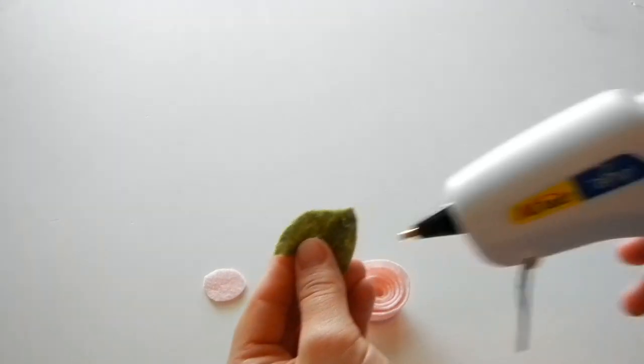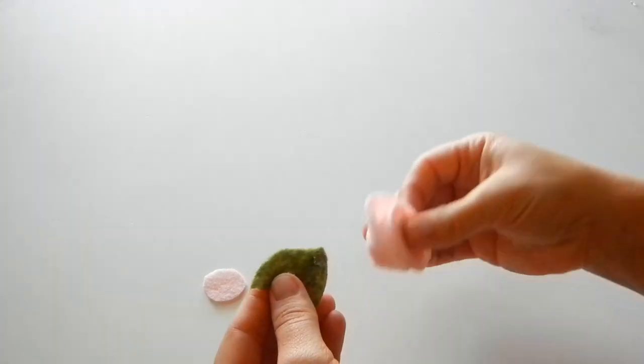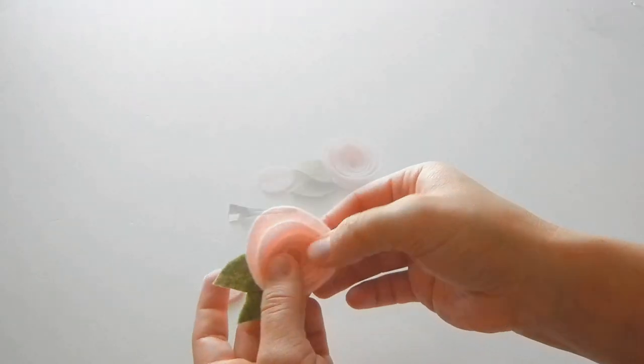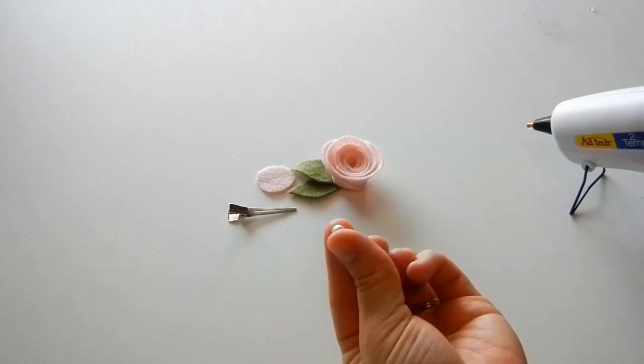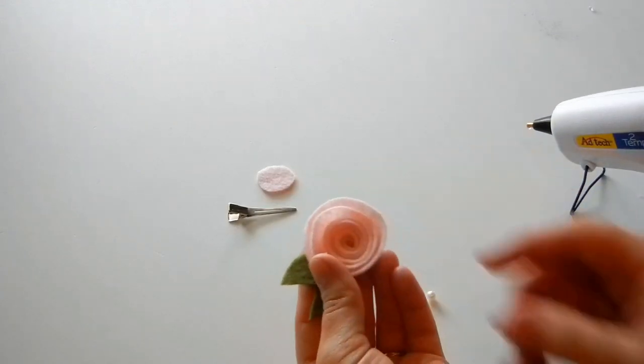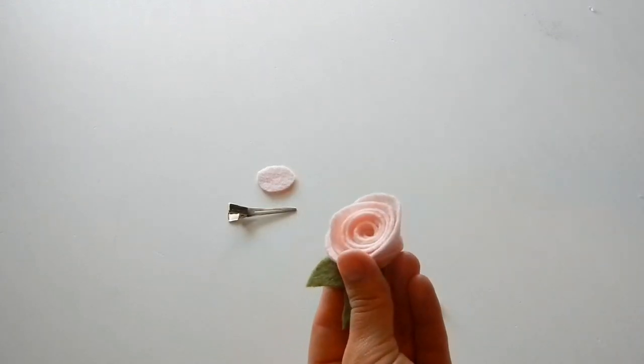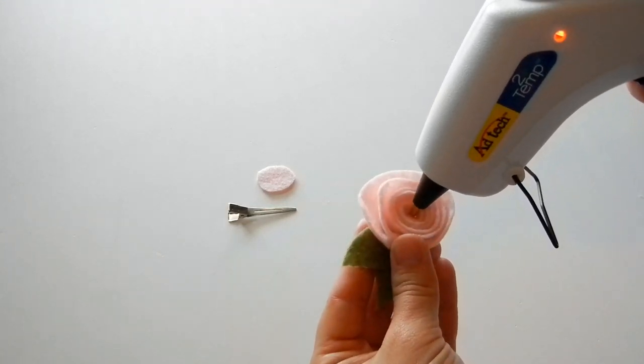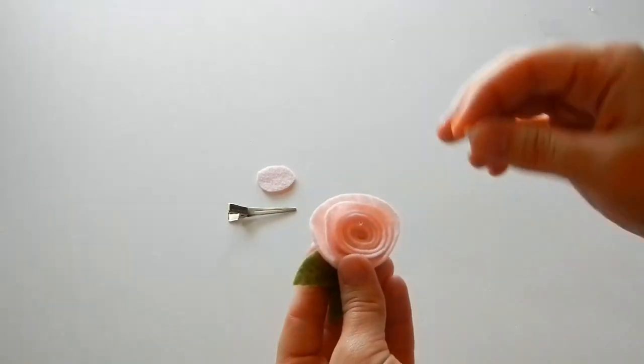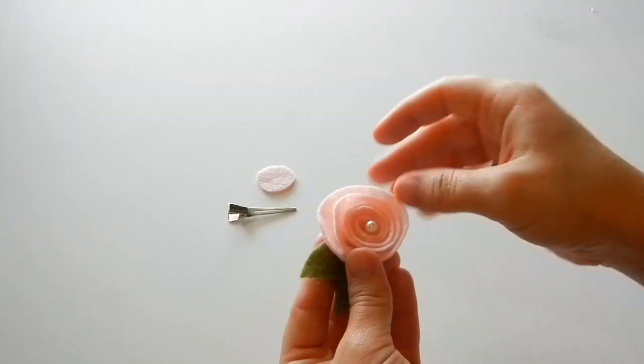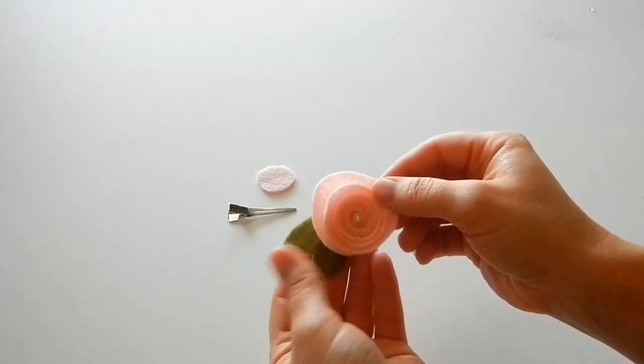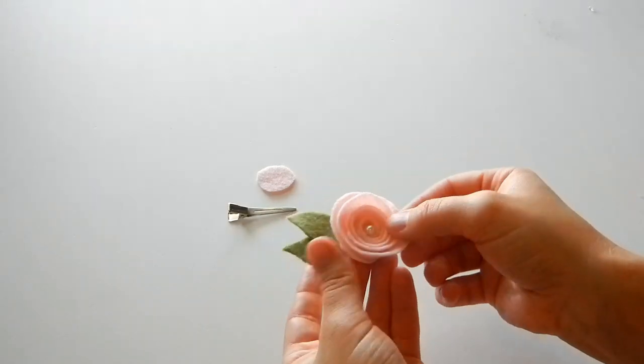Put a little bit of hot glue on the leaf and glue it to your flower. So I have just a little pearl here. Take your flower and we're going to put a little bit of glue in the center of our flower, and then take your pearl and set it in. That just adds some dimension to the flower, it's really cute.